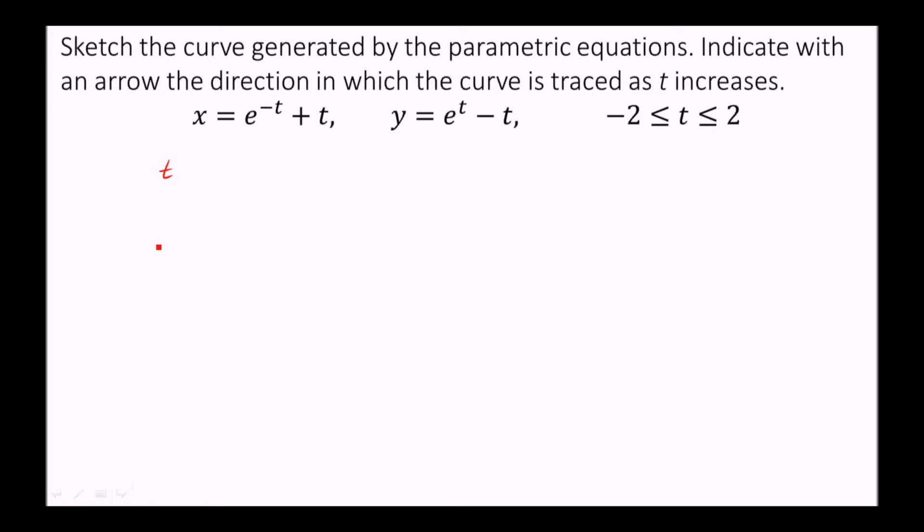So we have our table with t, x, and y, and we know t is restricted from negative two to two. So what we want to do is just pick a few values between these two numbers and including them because it's less than or equal to. And starting with negative two, we'll go by ones because that's easy enough to do. So we have five points. That's usually a good number to have.